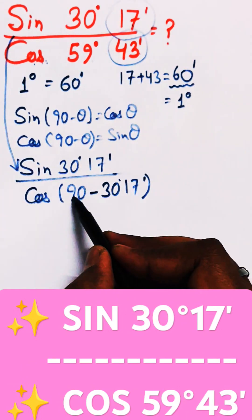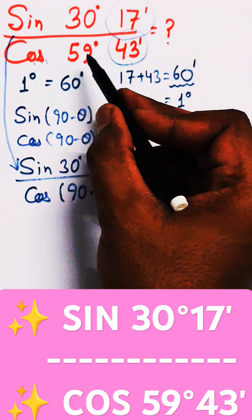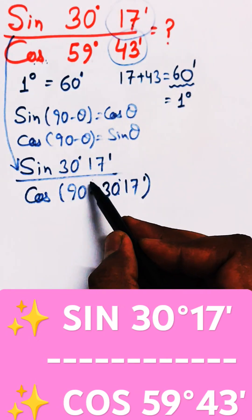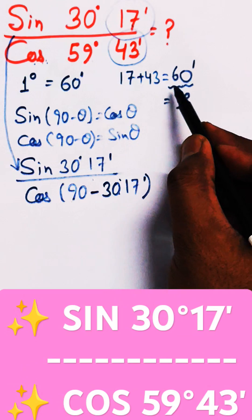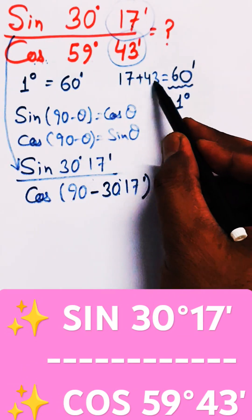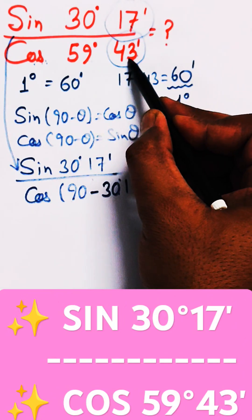Because you can see 90° - 30° is 60°. But we have 59°. So that last degree will equal 60 minutes, which is 17 + 43. And from that, if 17 is subtracted, we get 43. So this can be written like this.